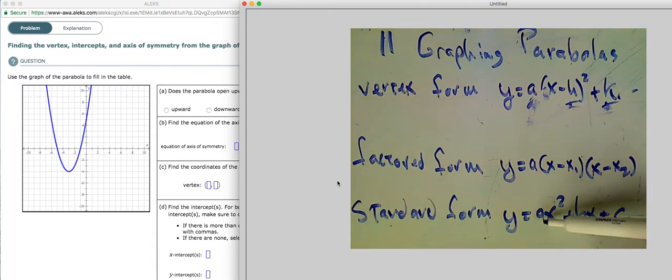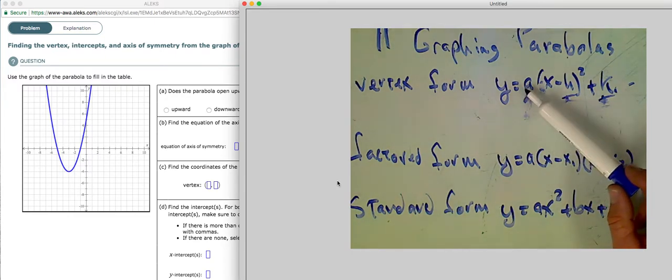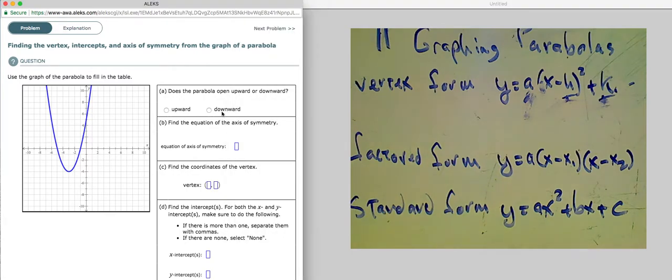A couple things you'll notice about all these is they all have an A. The leading coefficient's real important when you're talking about a parabola. It's sort of synonymous with slope in a line, in that if you have a positive slope, like you do over here, it's going to face upward. And if you have a negative slope, it's going to face downward. And then that vertical stretch is just the relationship between this vertex and this first point. It's demonstrated most easily there, but applies to all things.